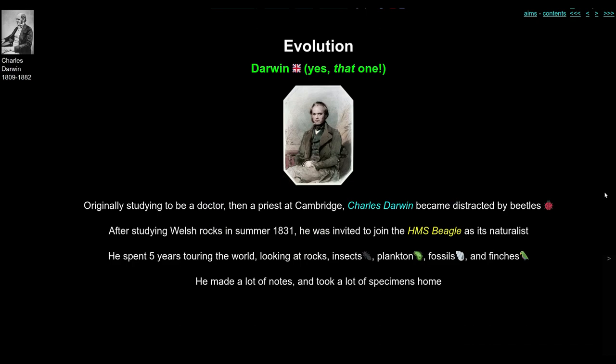Charles Darwin was the winner in the evolutionary race to get the right answer, so that's who we remember. He originally studied to be a doctor and then his father directed him towards a path at Cambridge. But along the way, Charles was always interested in animals and nature, and he became particularly distracted by beetles and collected thousands of them from Britain and elsewhere.